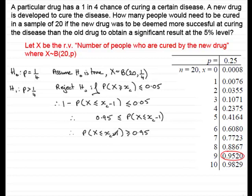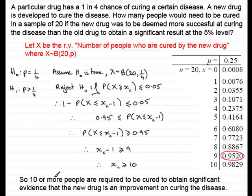Therefore XC minus 1 is greater than or equal to 9, giving XC equal to 10. This means that 10 or more people would need to be cured to obtain significant evidence that the new drug is an improvement on curing the disease. That brings us to the end of this example — hopefully you've been able to follow that.